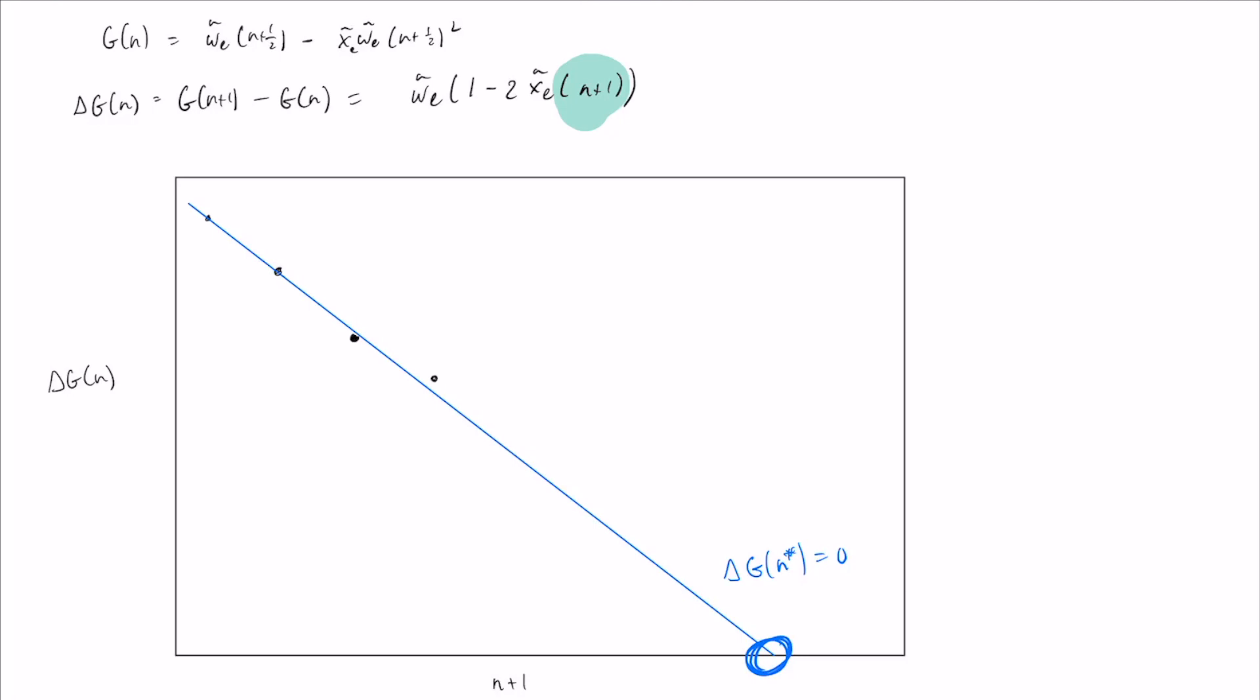We know from the discussion previously that when Δg(n*) is equal to zero, then we suddenly have an unbound particle. When the difference between energy levels approaches zero, we have an unbound particle, and so that means that the maximum allowed bound energy must be the largest integer that is less than n*.